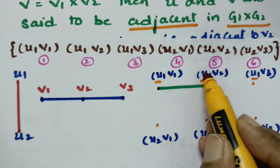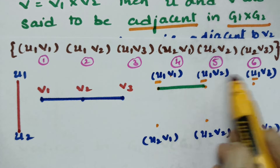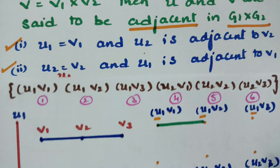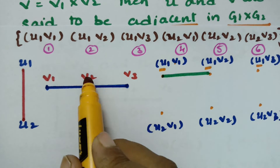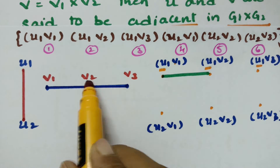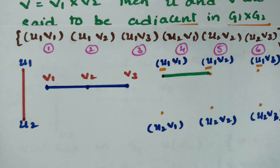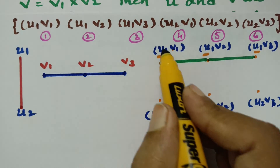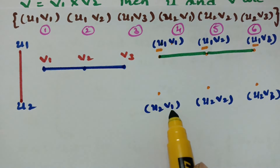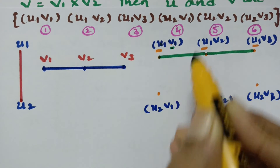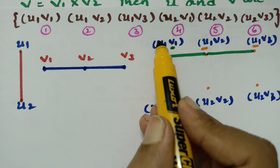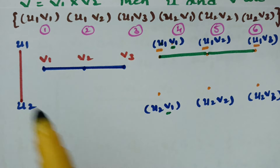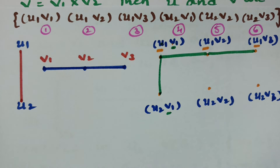Continuing: for points (U1,V2) and (U1,V3), U1 equals U1 so we check V2 and V3 — they are adjacent, so we can make an edge. Next, checking (U1,V1) and (U2,V1): the second components V1 and V1 are the same, so we check U1 and U2 — they are adjacent to each other in G1. Therefore, we can make an edge in the product graph.